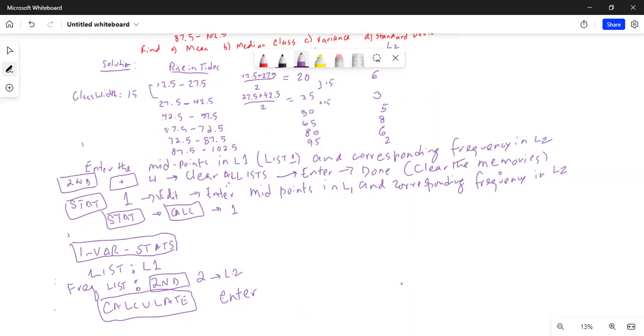The first answer is mean. Mean is X bar is equal to 55.5.